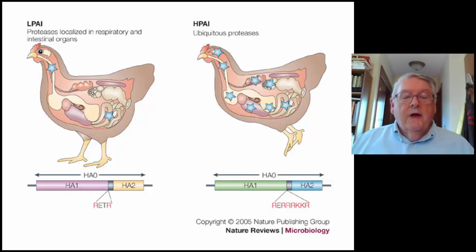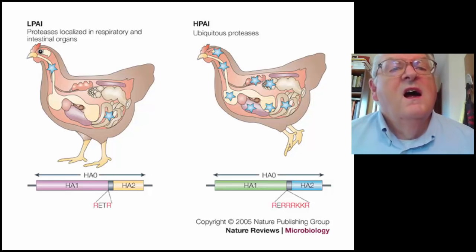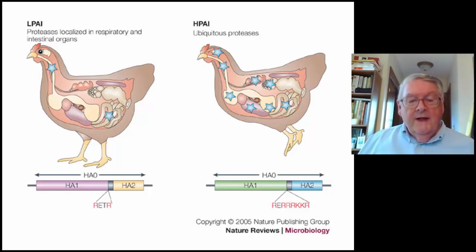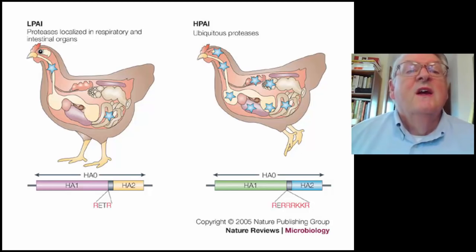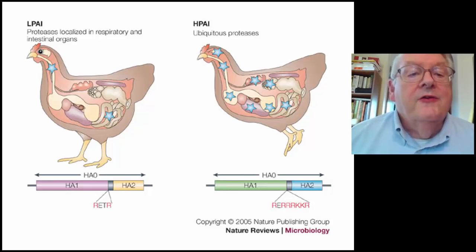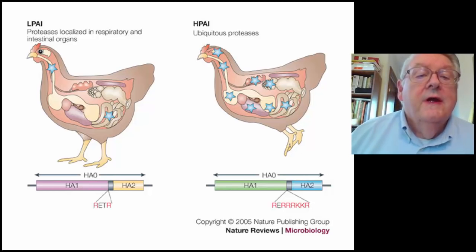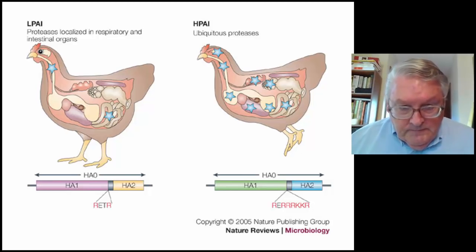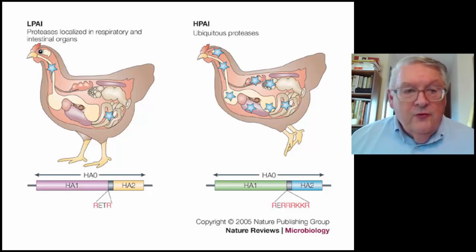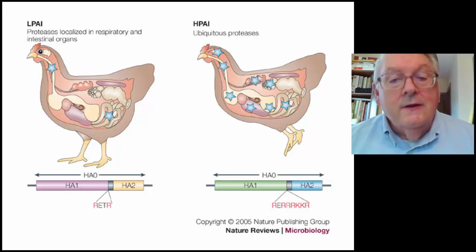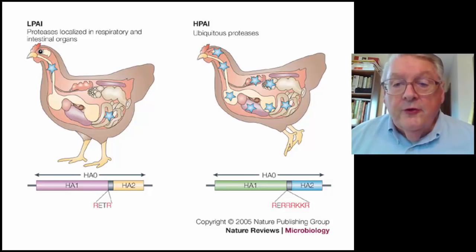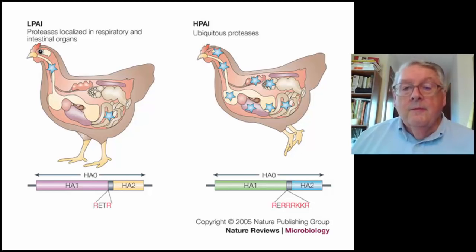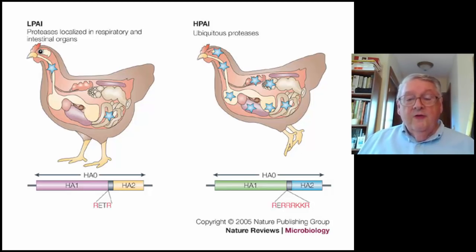Avian influenza viruses come in two different groupings in terms of their pathogenicity. In order for the virus to infect the cell, the HA has to be cleaved via a trypsin-like mechanism. In low pathogenic avian influenza viruses, the protease cleavage site is just four amino acids and is very slightly cleaved, so cleavage occurs only in the respiratory tract and the gut. Whereas the highly pathogenic avian influenza virus is susceptible to numerous proteases, so cleavage of the HA occurs throughout the animal, and that is why it is much more deadly.